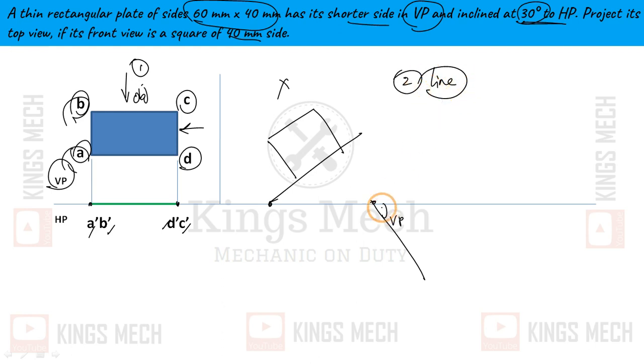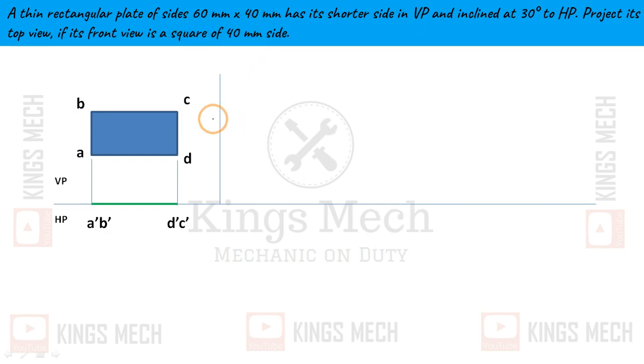If its front view is a square of 40mm side, so here the line project object and front view is a square of 40mm side. Here front view square 40mm, square here. This is 60, this is 40, above shadow. In the starting point and ending point 60.